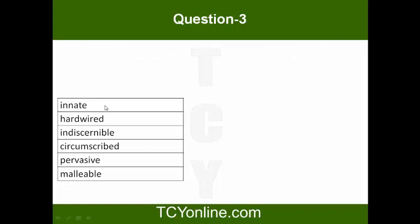Question number 3. Let's do the pairing. Innate is something that comes by birth. Something you are born with. Innate qualities are qualities that you are born with. A similar word for innate would be hardwired. Something that comes by birth. Innate and hardwired is a pair.